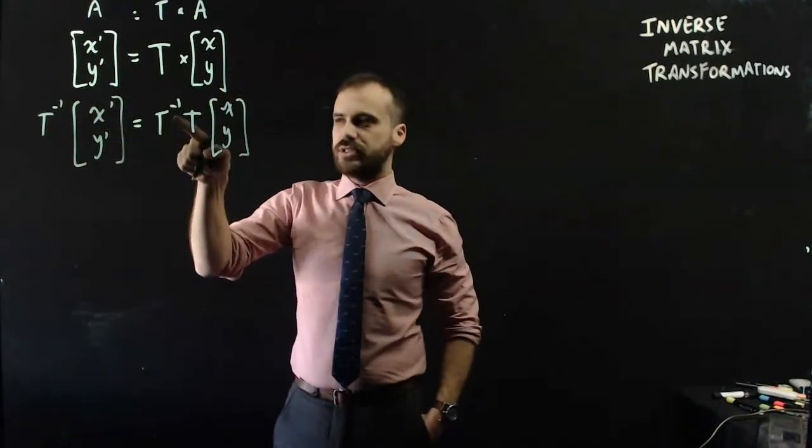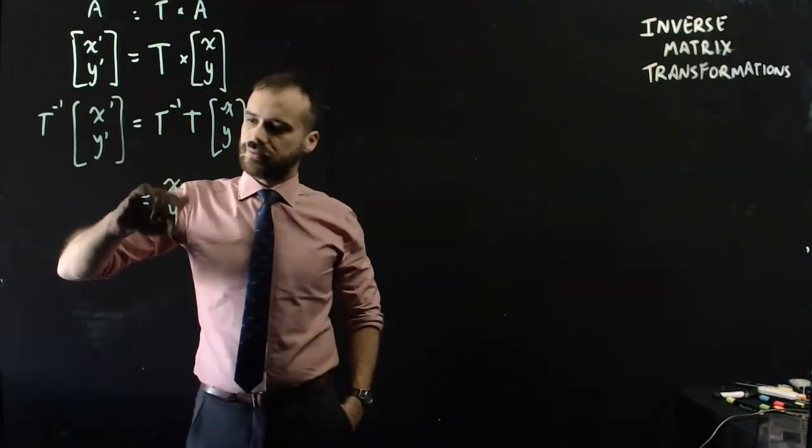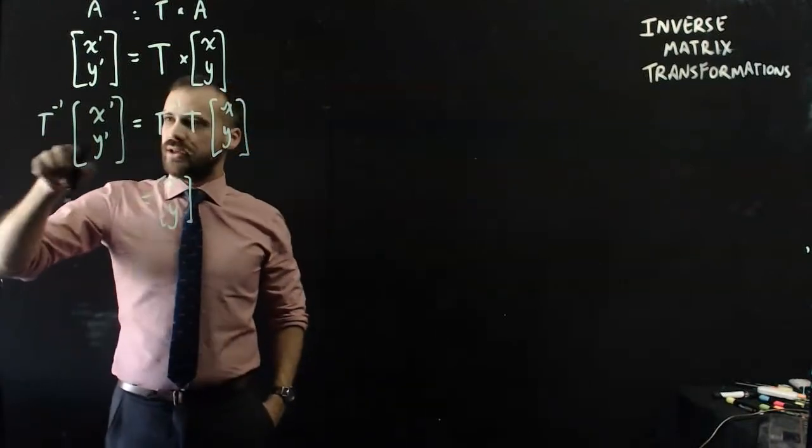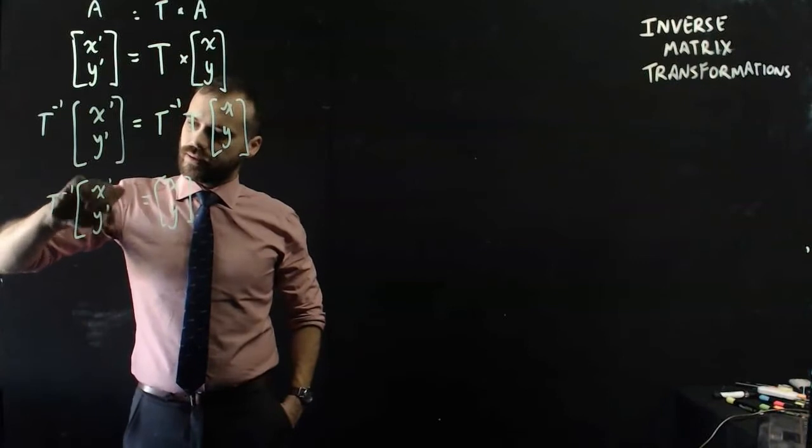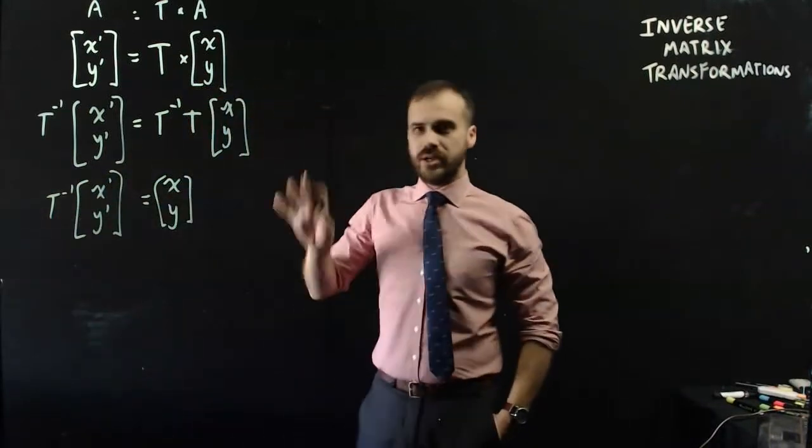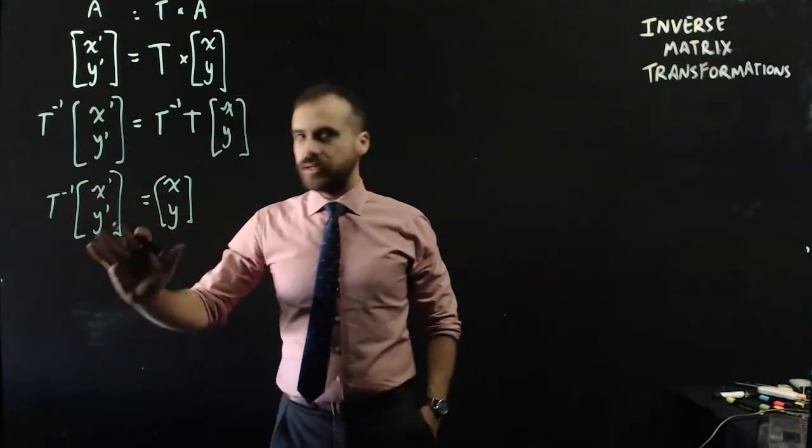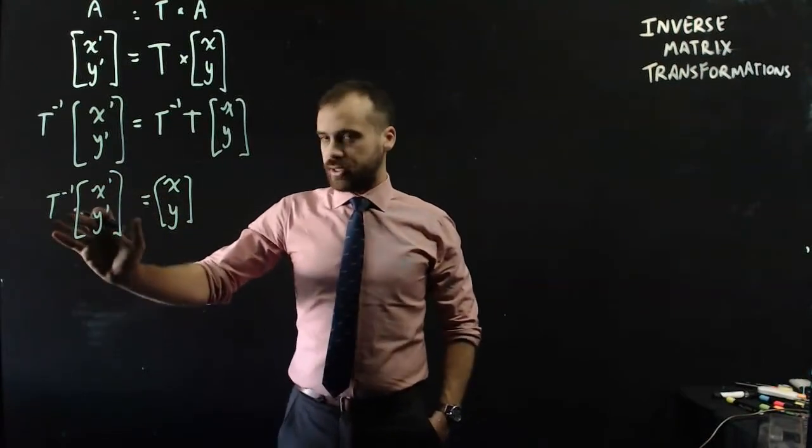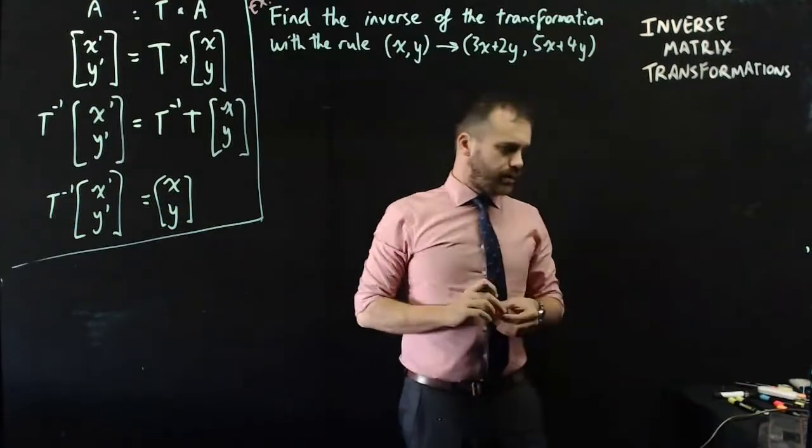Now, the inverse of t times t will just equal xy. And now I have this formula here. And we can use that formula to take an image, take the inverse of a transformation matrix, and find the original object.